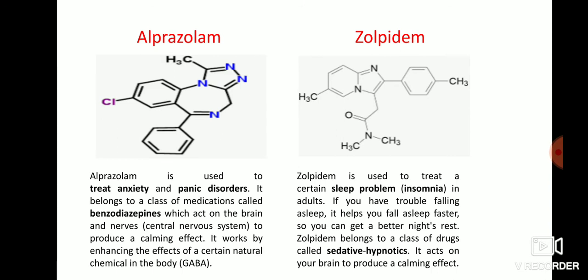Next is zolpidem, a drug used to treat sleep problems — that is, insomnia — where some people have trouble falling asleep. It helps to fall asleep faster so you can get a better night's rest. Zolpidem belongs to the class of sedative-hypnotics and acts on the brain to produce a calming effect.